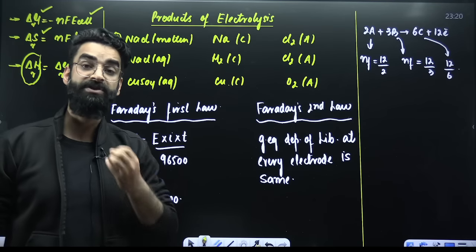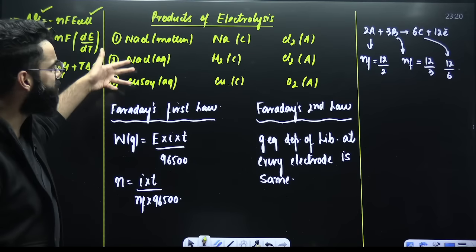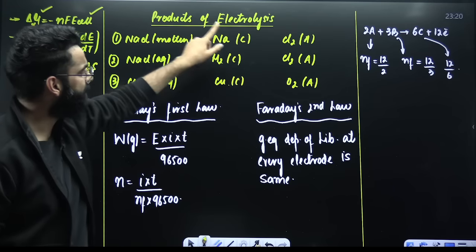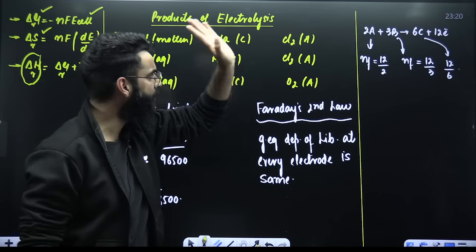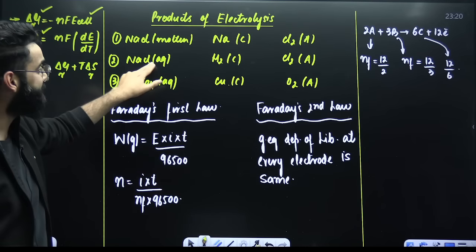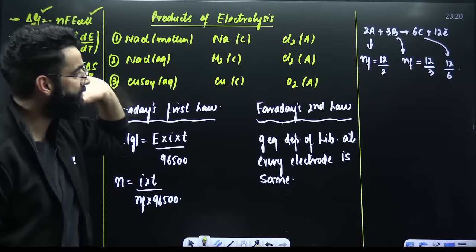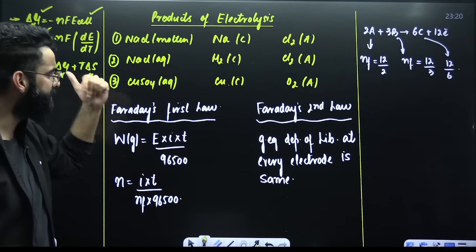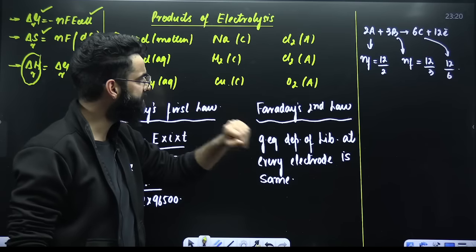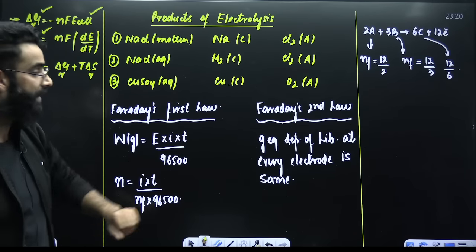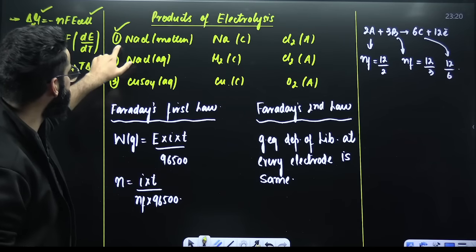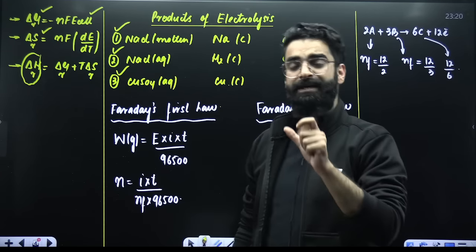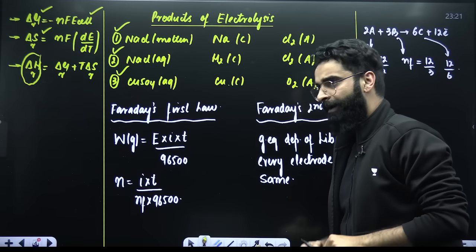Regarding products of electrolysis with inert electrodes: electrolysis of molten NaCl gives sodium deposited at cathode and Cl₂ gas liberated at anode. Electrolysis of aqueous NaCl gives H₂ gas at cathode and Cl₂ gas at anode. Electrolysis of aqueous CuSO₄ gives copper deposited at cathode and O₂ liberated at anode.